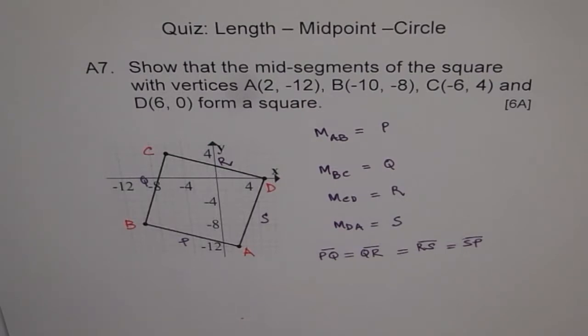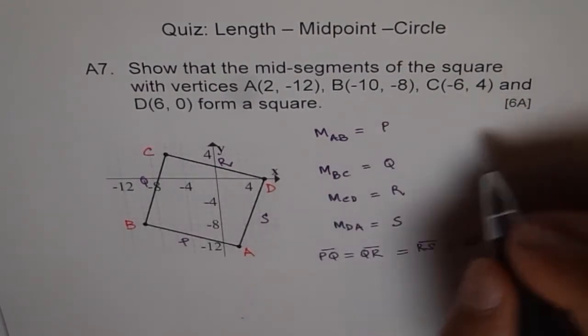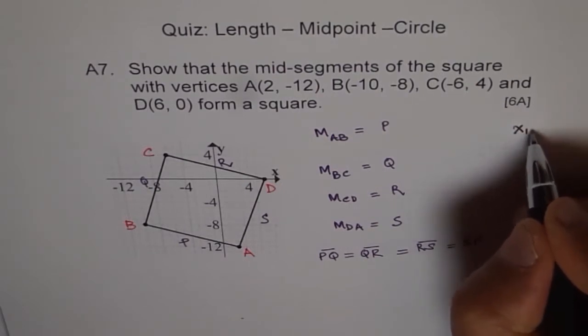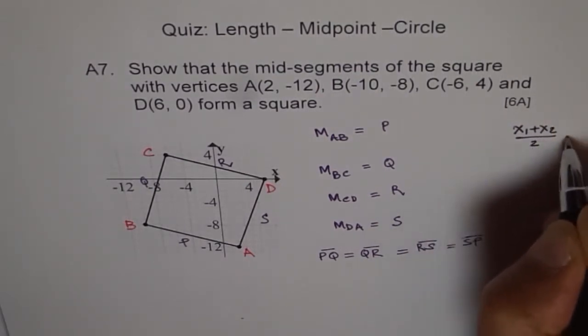You know the formula for midpoint? The formula for the midpoints is x1 plus x2 divided by 2 is the x value, and y1 plus y2 divided by 2 is the y value.